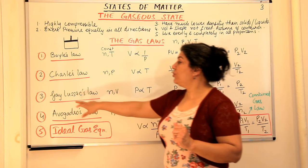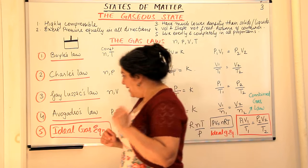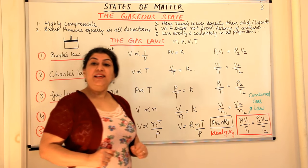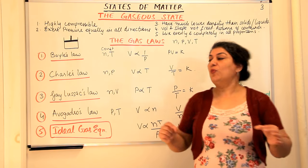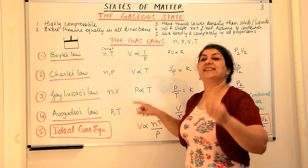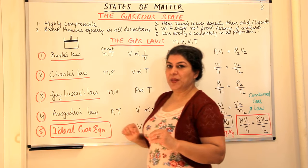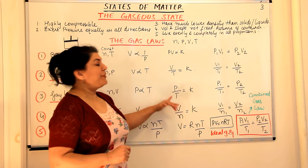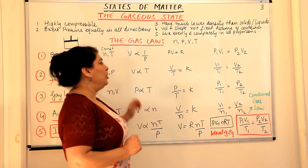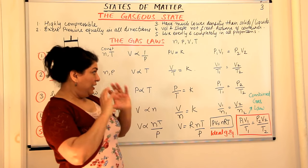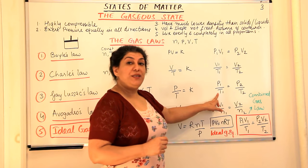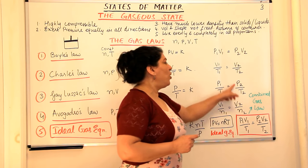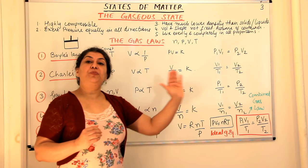The third law is Gay-Lussac's law. Gay-Lussac kept the number of moles and volume constant, then observed the relationship between pressure and temperature. For a constant volume, the pressure of a gas is directly proportional to the temperature. So P/T is constant, meaning P1/T1 = P2/T2. For a fixed container at a certain number of moles, if pressure changes from P1 to P2, temperature automatically changes from T1 to T2 so that the ratio of the two remains the same.